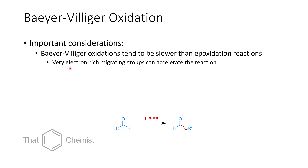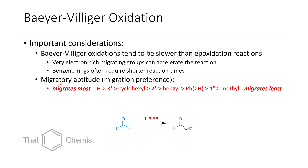These reactions will be faster if you have a really electron-rich migrating group — like an ether that's adjacent, a nitrogen-containing compound, a benzylic position, or a benzene ring. The most important thing to note is the migratory aptitude order: hydrides migrate most easily, then tertiary positions, then cyclohexyl, then secondary, then benzylic, then arenes or heteroarenes, then primary positions, then methyl positions.